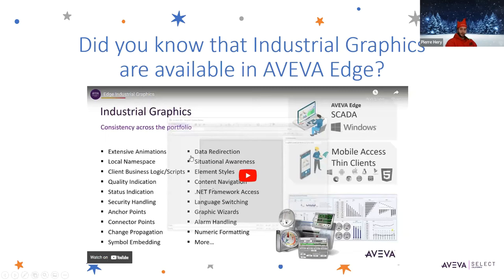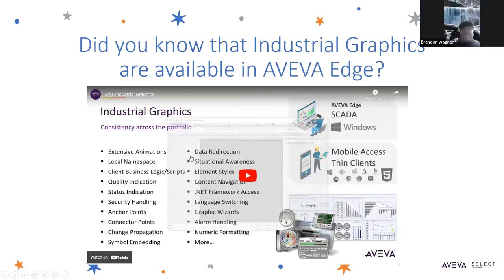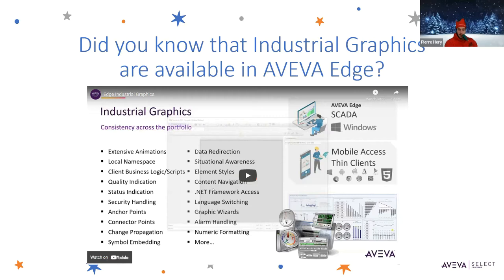Next, let's talk about industrial graphics. Did you know that industrial graphics are available in VIVA Edge? Industrial graphics are not only available on the Windows version of Edge, but on the mobile access thin clients as well. This means that you can do the same industrial graphics from a mobile phone out in the field as you can see them on your computer.